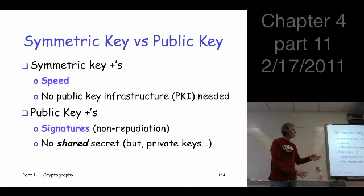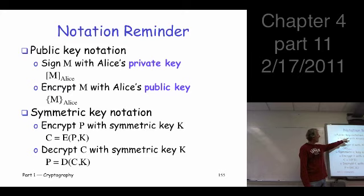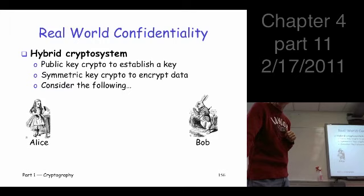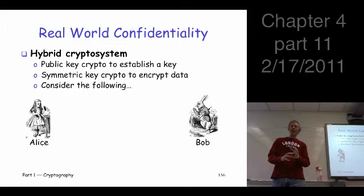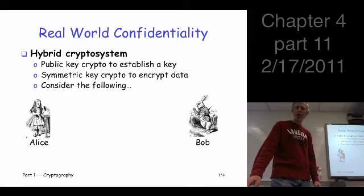The question is: can we get the best of both worlds? Can we get the advantages of both systems simultaneously? A hybrid cryptosystem — we're going to use both public keys and symmetric keys and try to get the best of both. Just a reminder of our notation: if we sign with the private key, that's the square brackets; if we use the public key, that's the curved brackets. For symmetric keys, we encrypt plaintext with key K to get ciphertext, and decrypt ciphertext with key K to get plaintext.